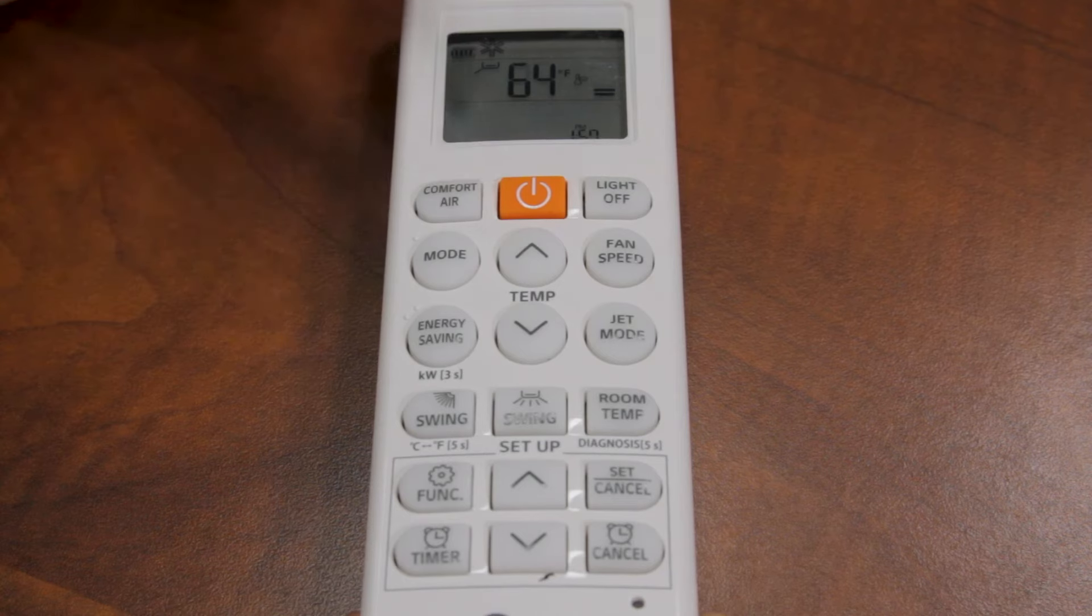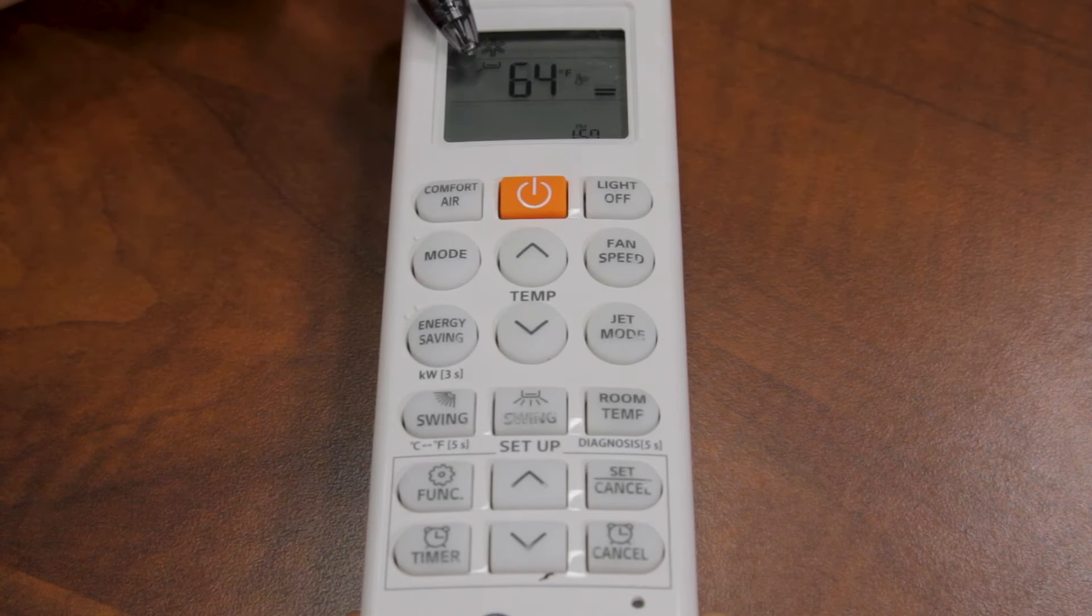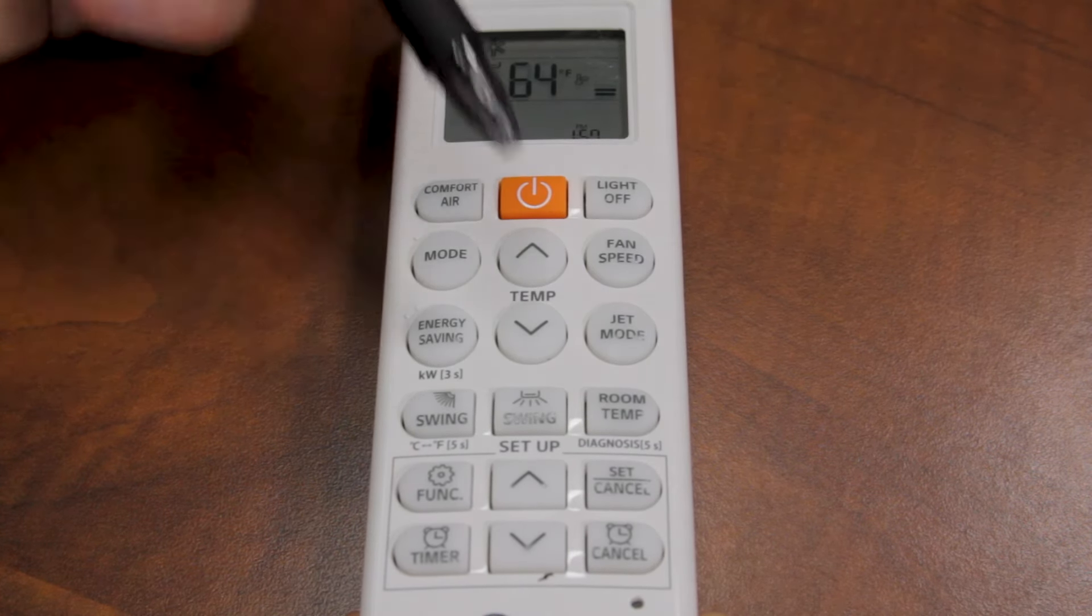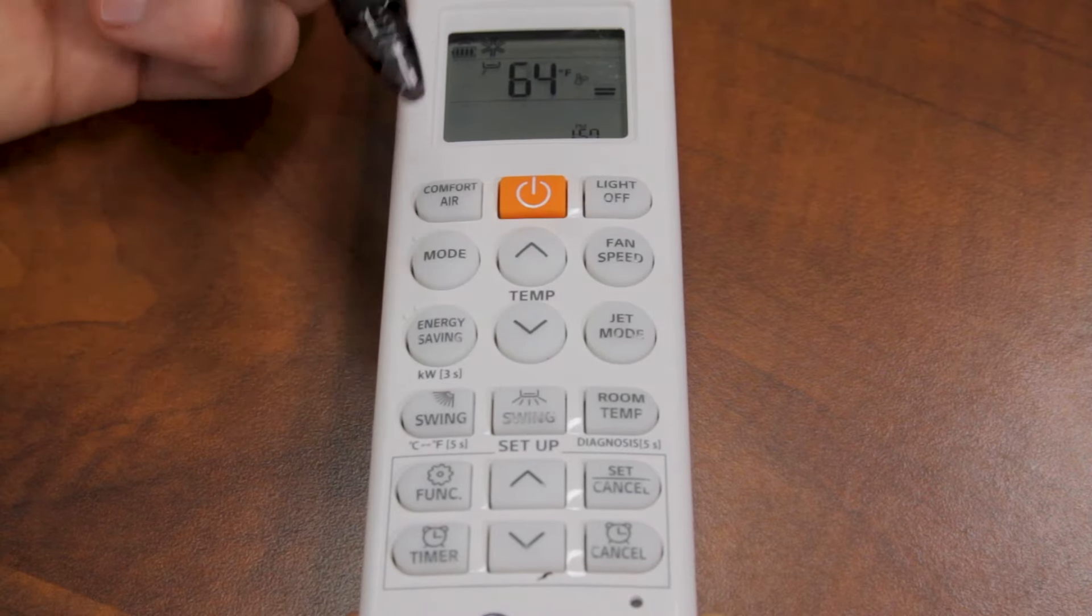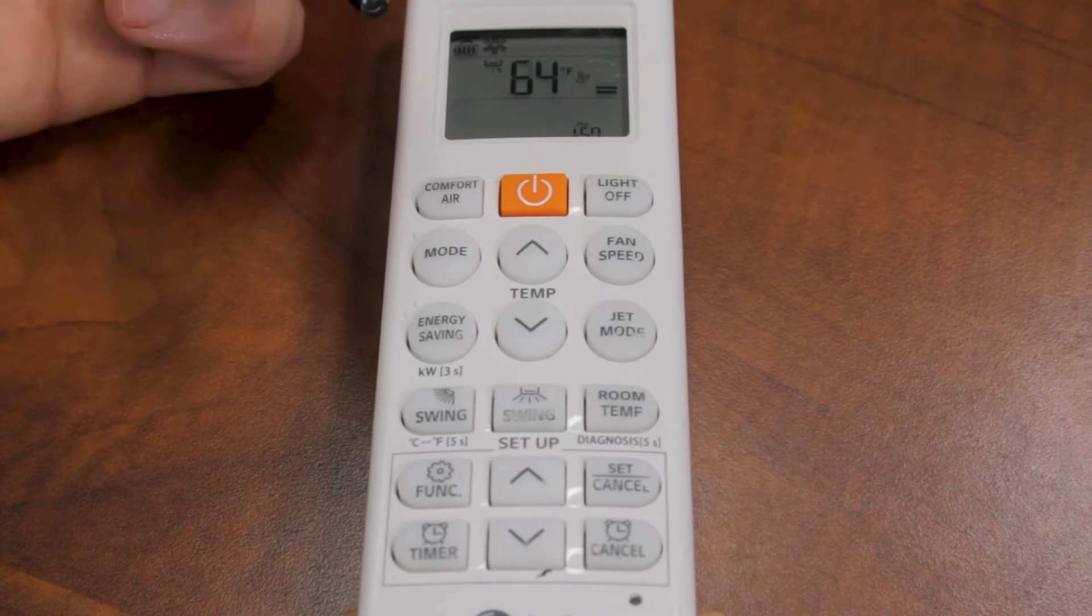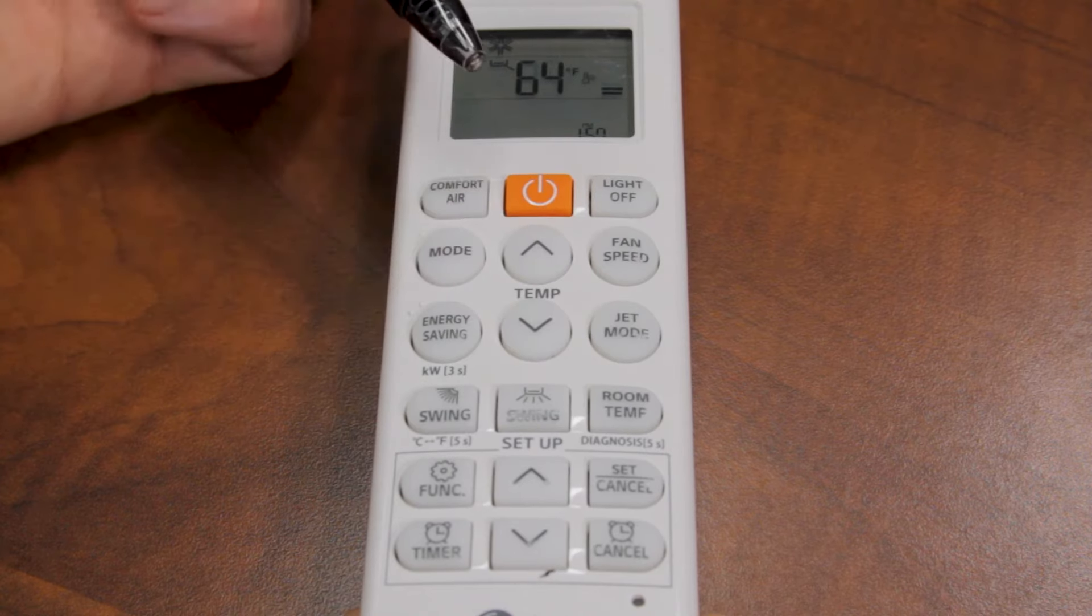This swing button is to adjust the airflow from left to right. There's going to be one line that points as to where the air is going. Every time you press it, that line is going to move a little bit.